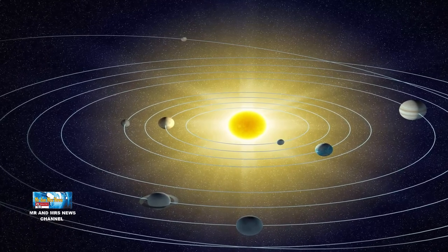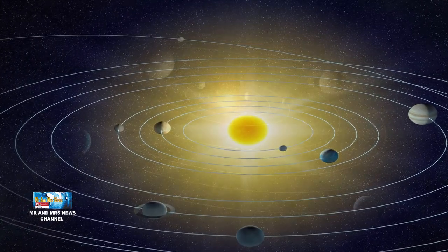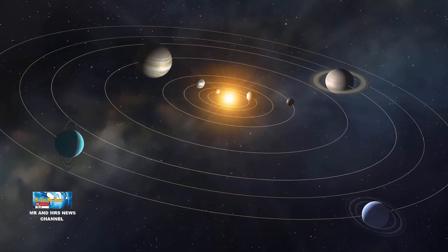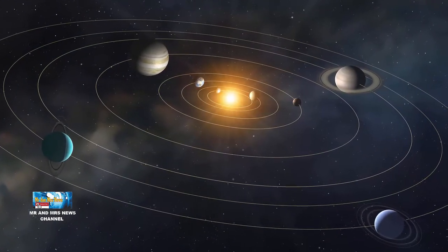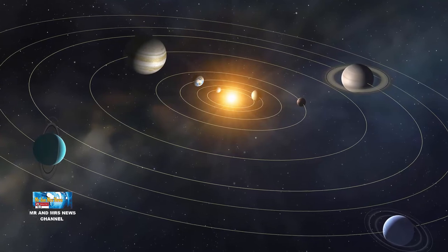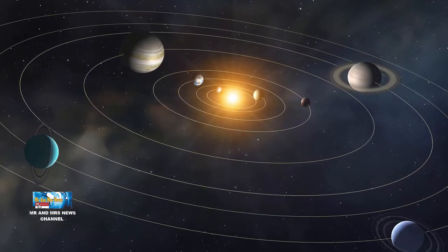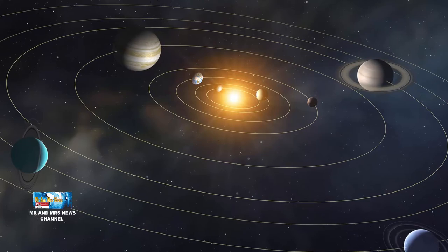Namun, gaya gravitasi matahari tetap tergantung pada jarak sehingga orbit masing-masing planet tetap berjauhan dan tidak saling mengganggu. Nah, begitulah alasan mengapa semua planet di tata surya mengelilingi matahari.